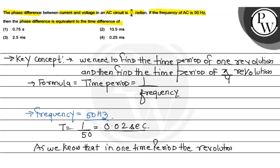How many revolutions happen? 2π. For example, if we have a wave, we have a time period where we have a crest and a trough complete. So what happens here? 2π. This half is π and this half is π, so the total is 2π. So according to this time period, the revolution is 2π.